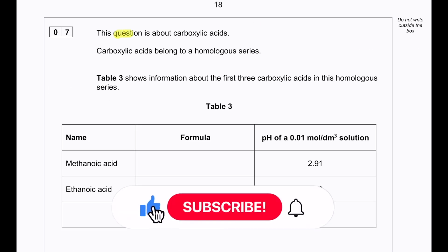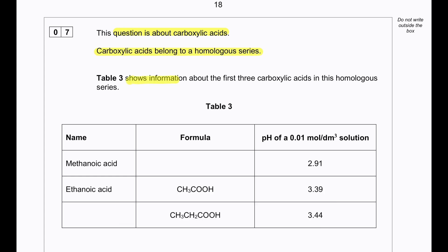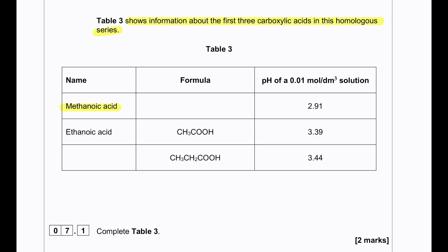This question is about carboxylic acids. Carboxylic acids belong to a homologous series. Table 3 shows information about the first three carboxylic acids in this homologous series. We can see methanoic acid. The formula is missing. So the methanoic acid formula will be HCOOH and then ethanoic acid. And then the next one we can see there are three carbons, meaning that this is propanoic acid.